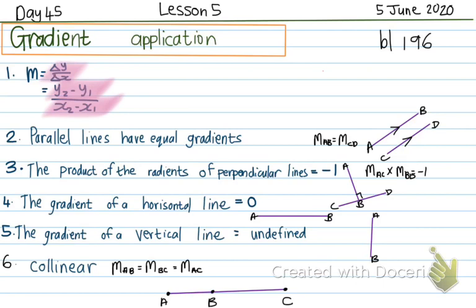The second thing we're going to learn is that parallel lines have equal gradients. Gradients are about how steep lines are, so two lines that are parallel are evenly steep, which means the gradients must be equal. So for instance, if this line has a gradient of 2, then this line will also have a gradient of 2.